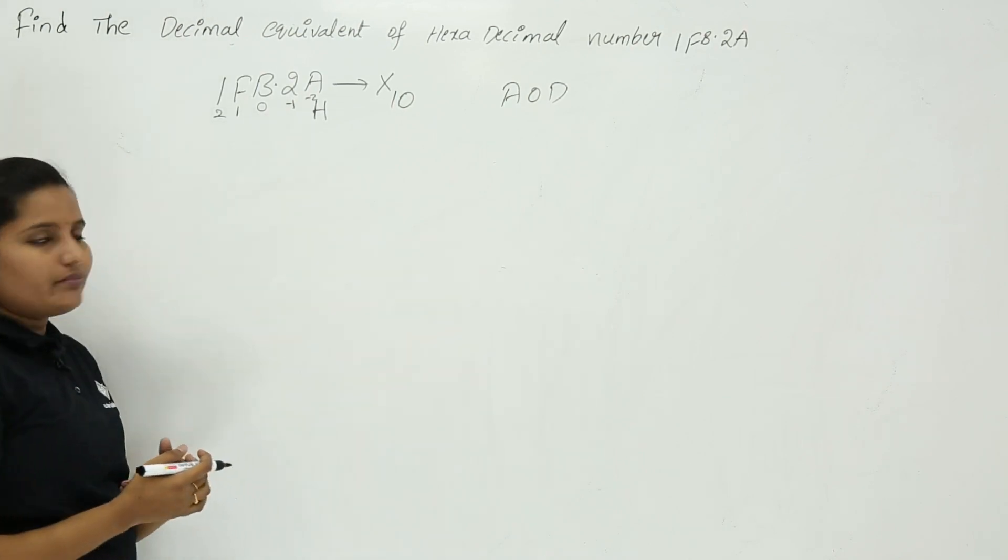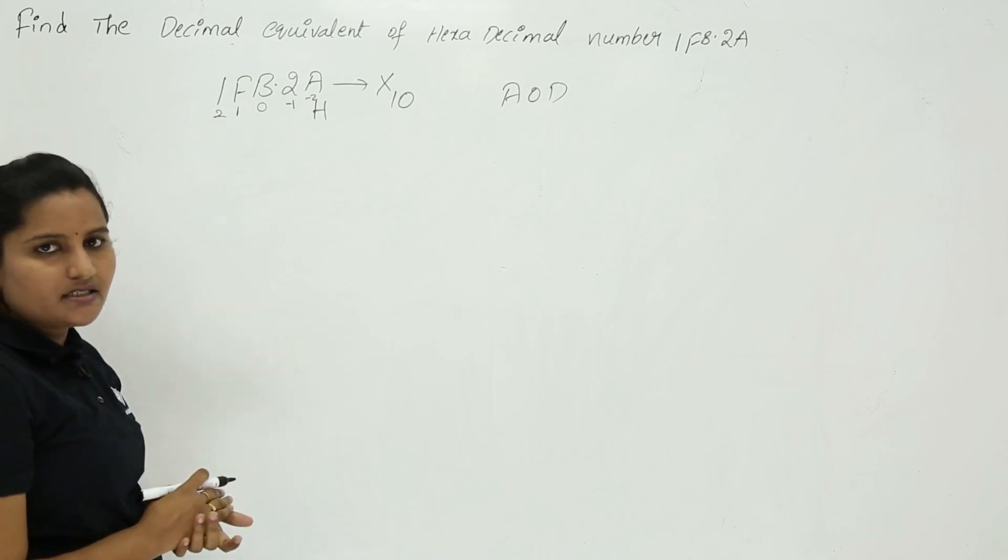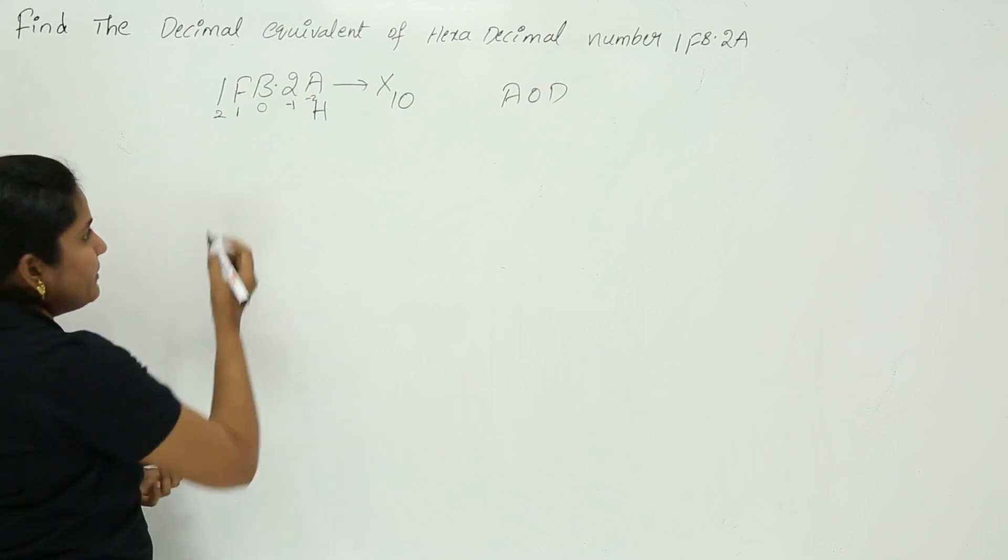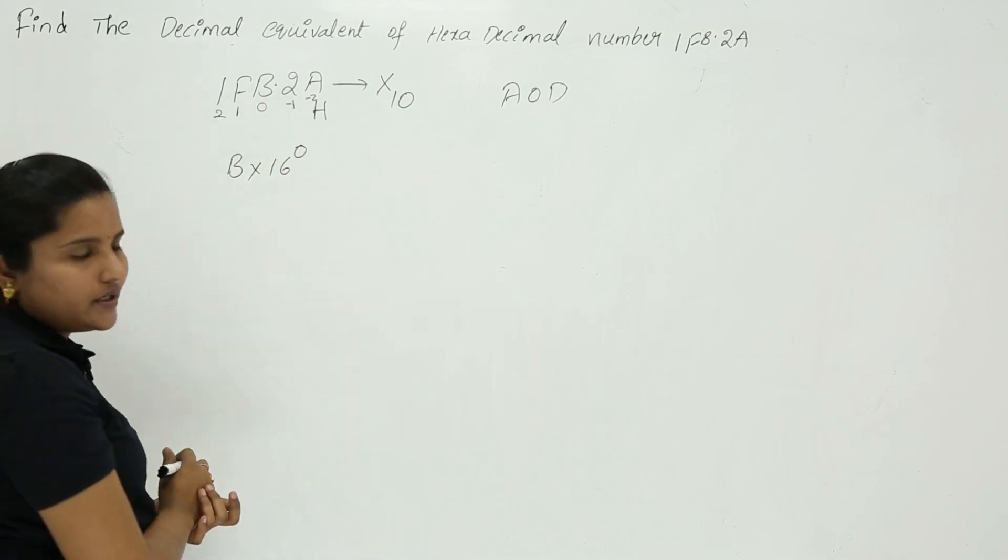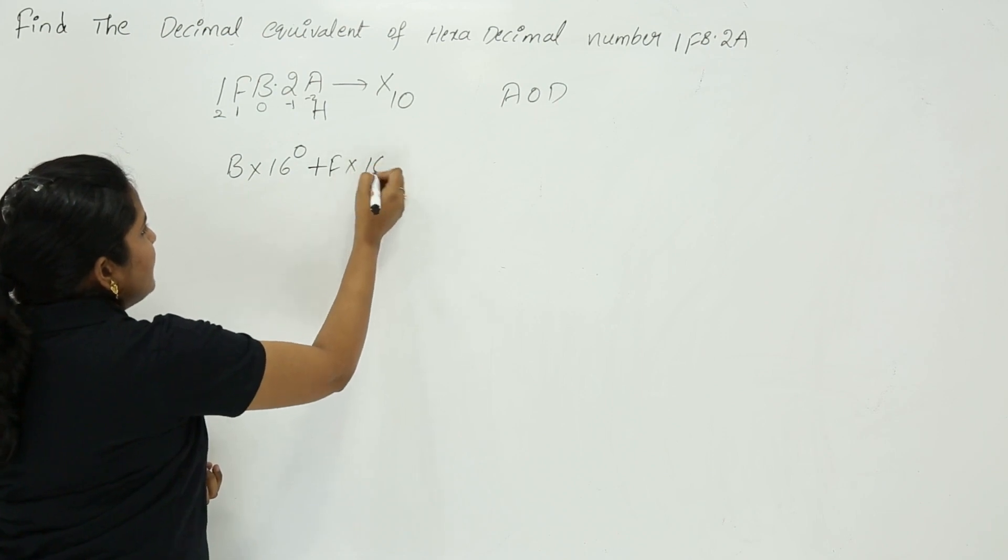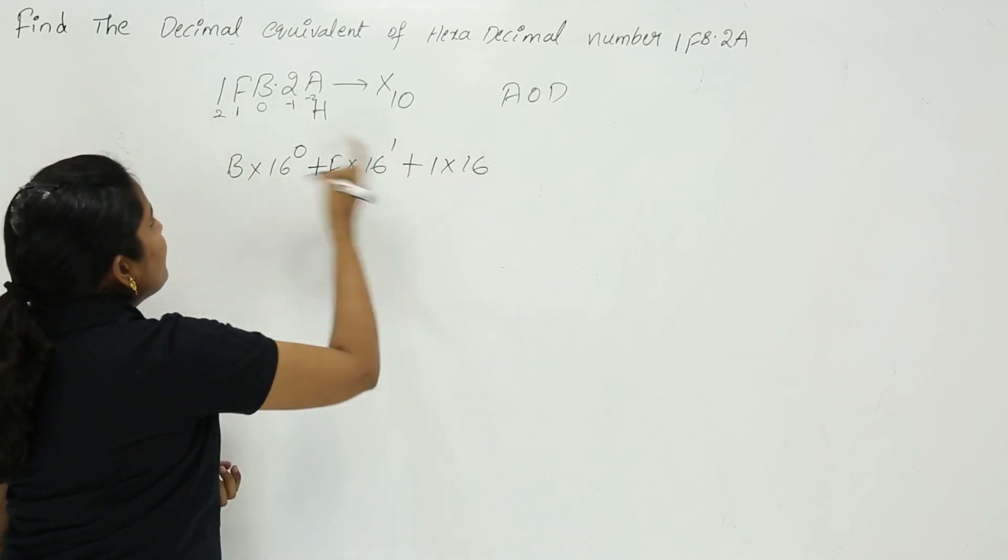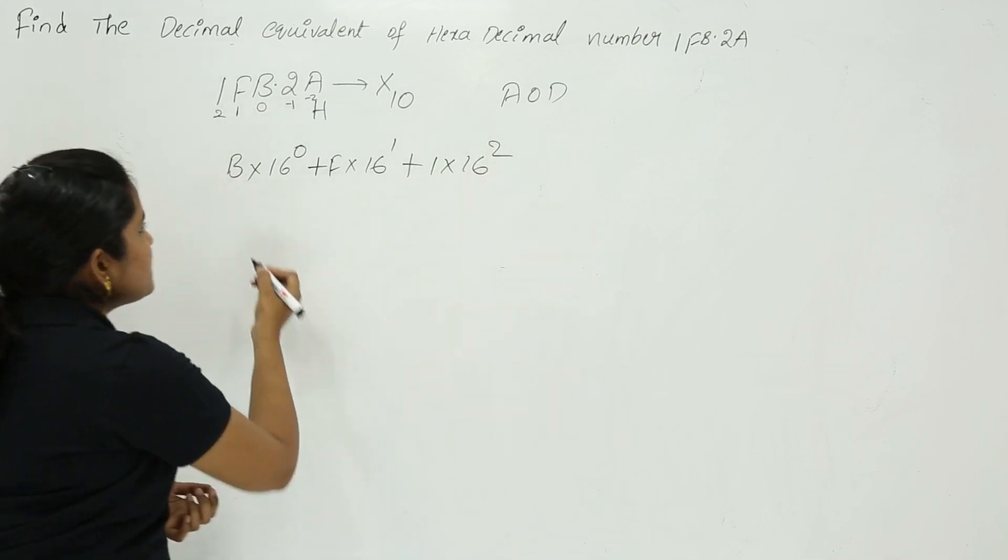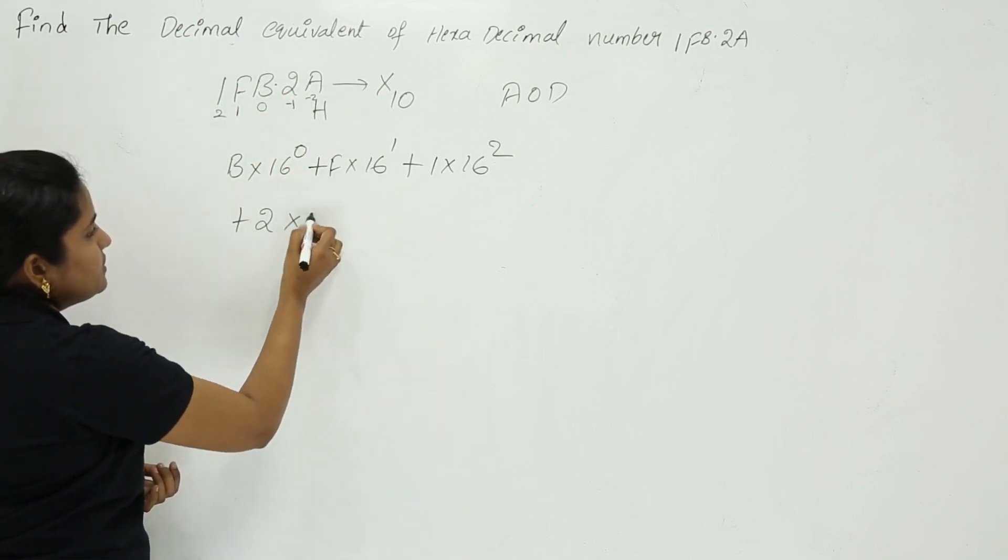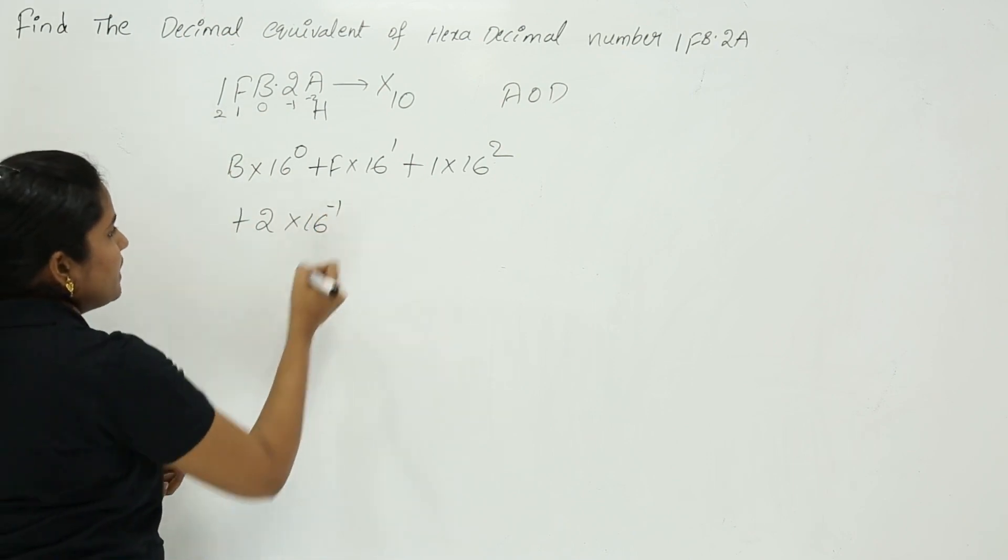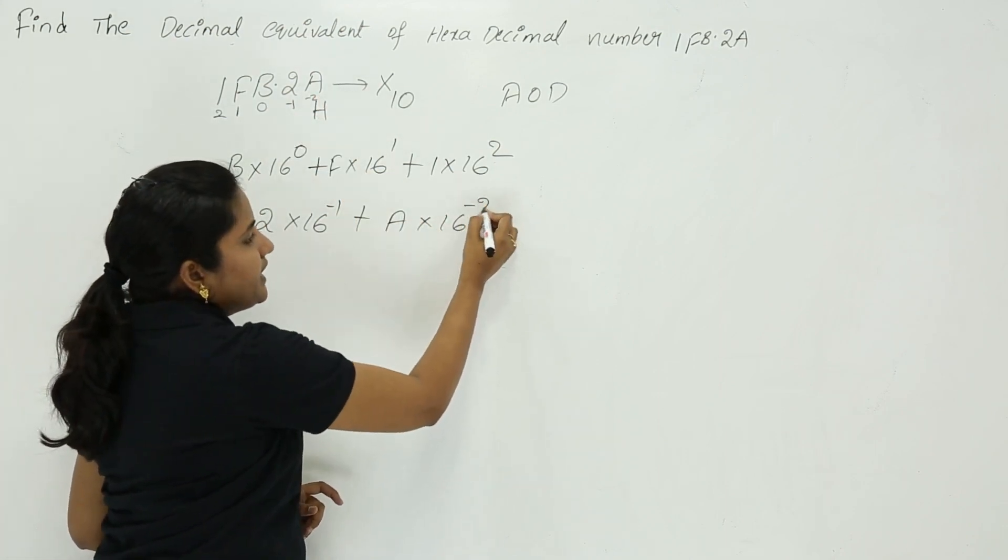Here I am starting that multiplication - multiplication of digit into 16 power place value. H represents 16 here. So I am taking from 0th place: B into 16 power 0, plus F into 16 power 1, plus 1 into 16 power 2. Next, point after digits: 2 into 16 power minus 1, plus A into 16 power minus 2.